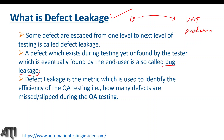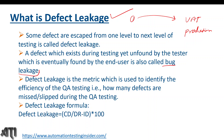So what is the formula for defect leakage? The formula is: CD divided by (DR minus ID), multiplied by 100. CD is the defects found during UAT testing or in production. DR is the defects raised by the testing team. ID is the invalid defects.